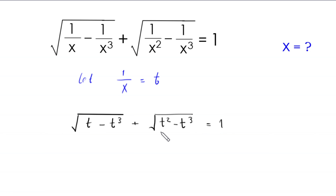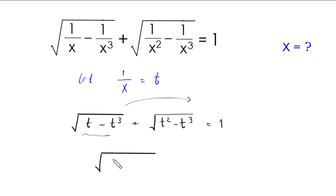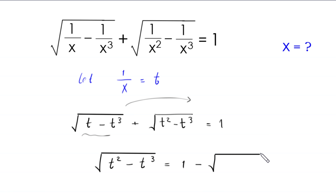Now we move this term to the right hand side. So this will become: square root of (t² minus t³) is equal to 1 minus square root of (t minus t³).